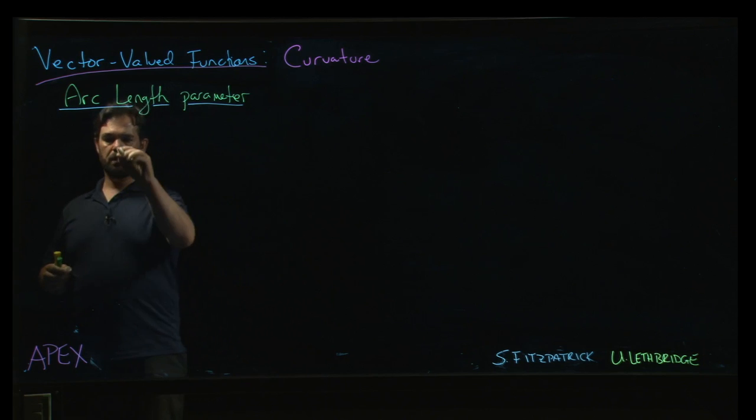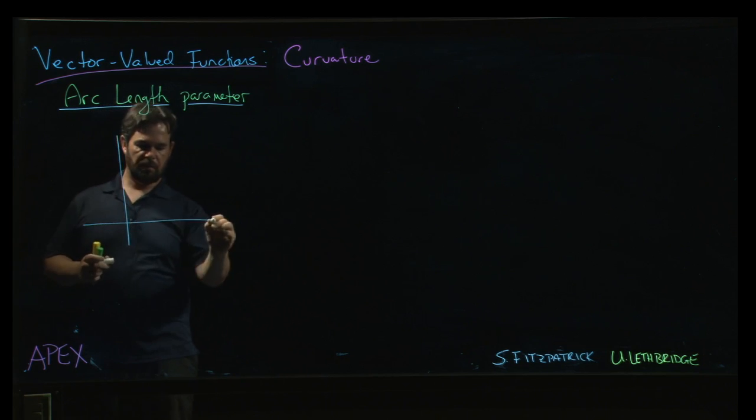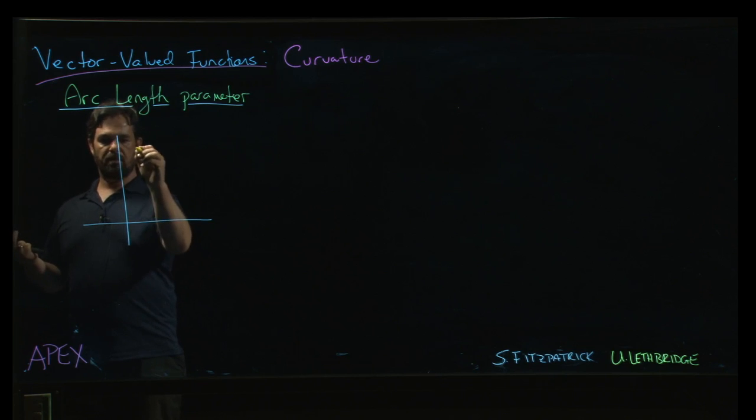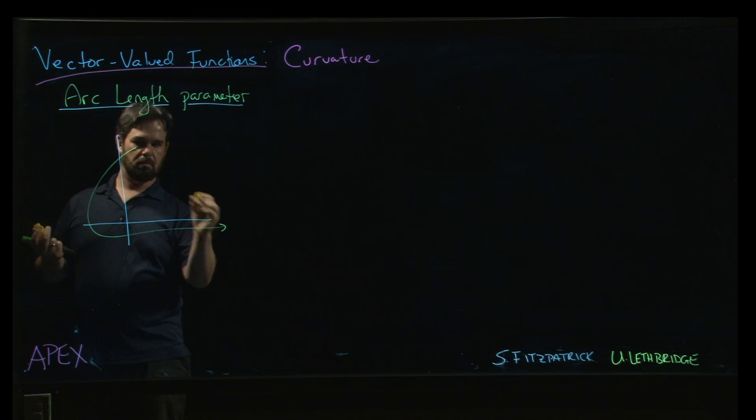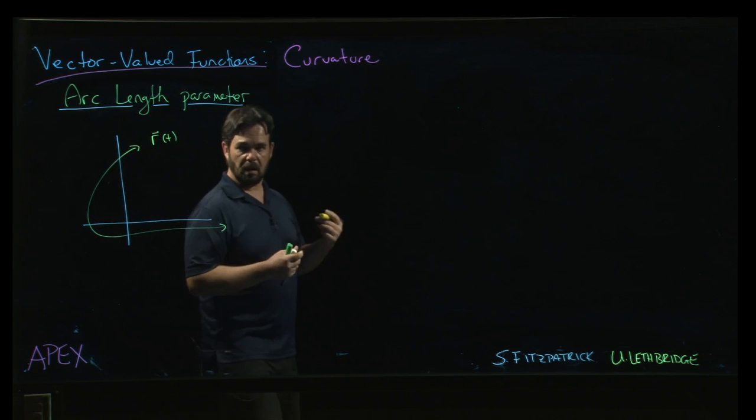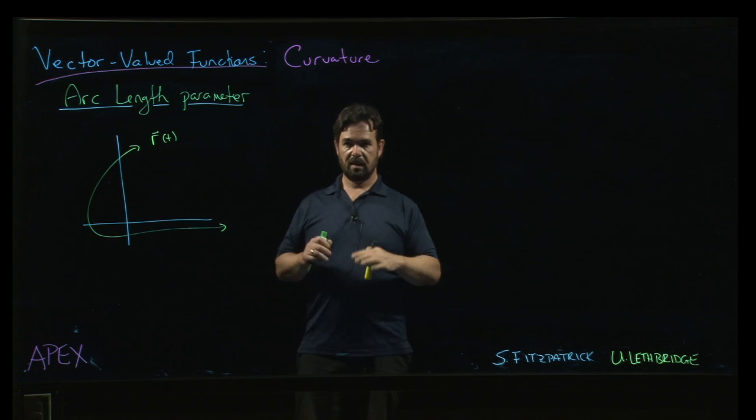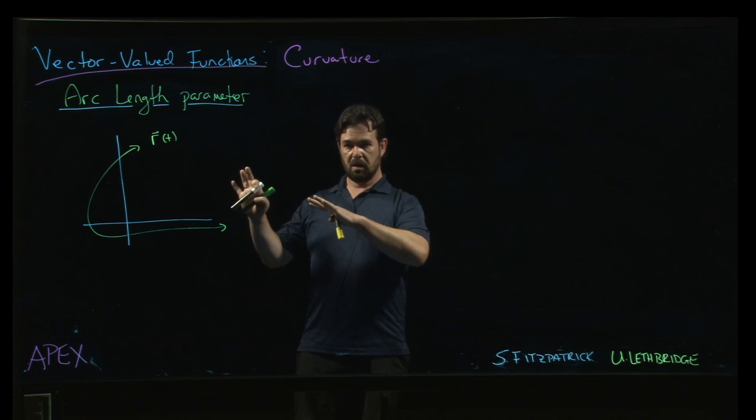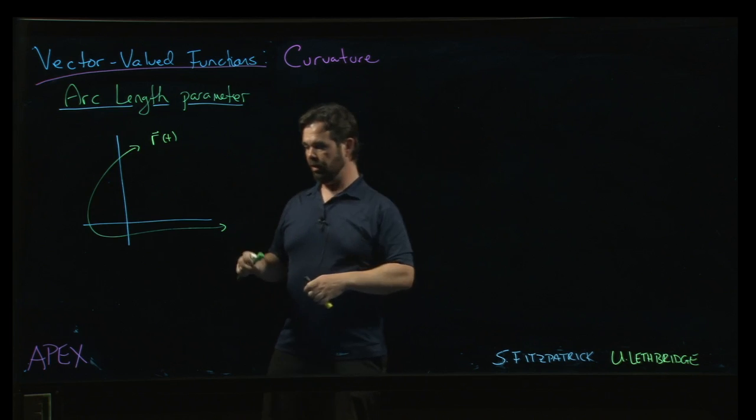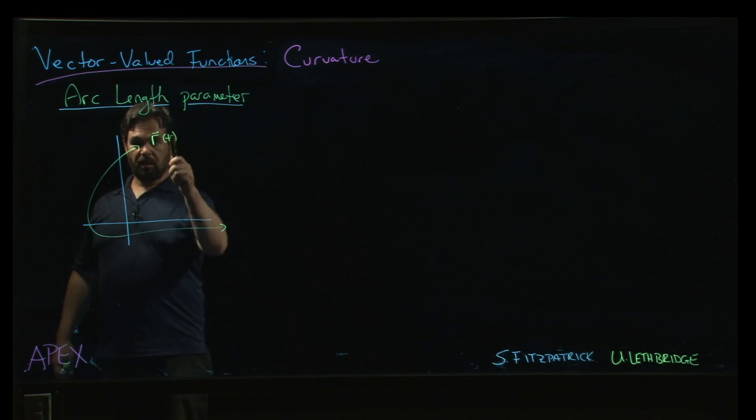The idea here, and we've seen this in some examples, is that you might have some vector-valued function and you graph the vector-valued function and it gives you a curve. This is the graph of, say, r of t. But depending on how you parameterize the curve, there can be many different parameterizations that produce the same curve. In other words, there can be different vector-valued functions that produce the same graph.